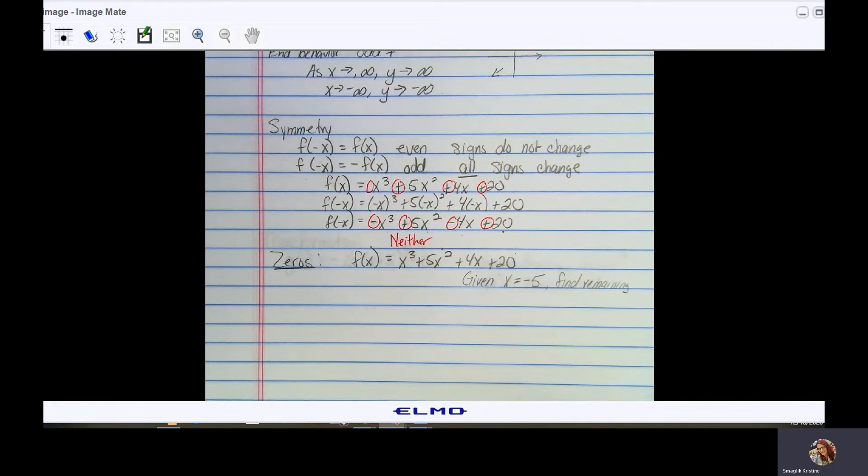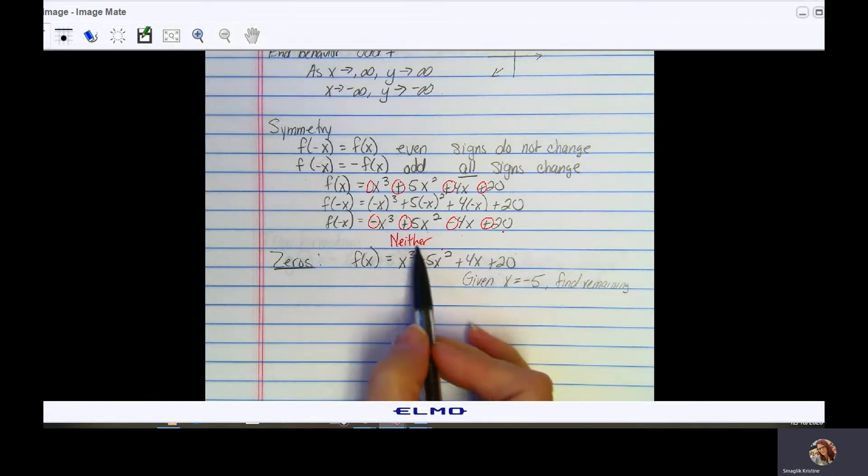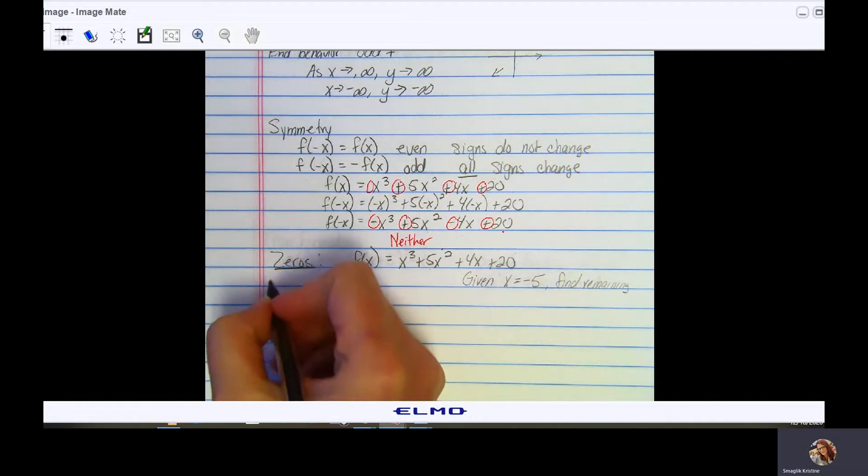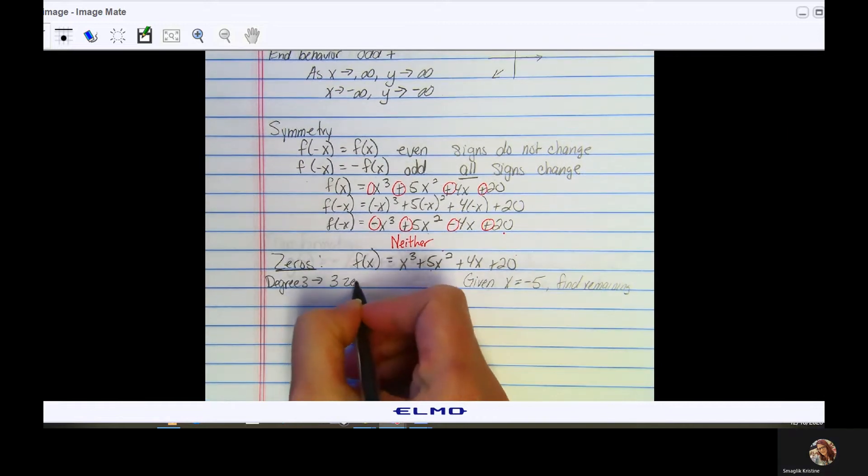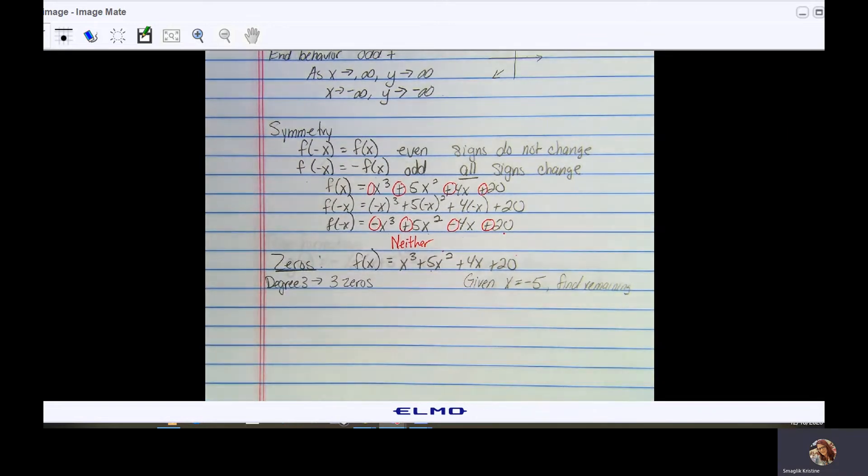Now let's talk zeros. The number of zeros your function has is dependent on the degree of the function. This function we're working with is a degree of 3, so that means you're going to have three zeros. Some of those zeros might manifest as an x-intercept, but some of the zeros might be complex, which then of course would not cross the x-axis.